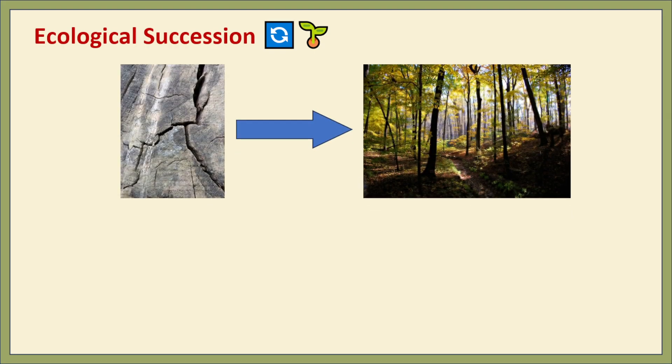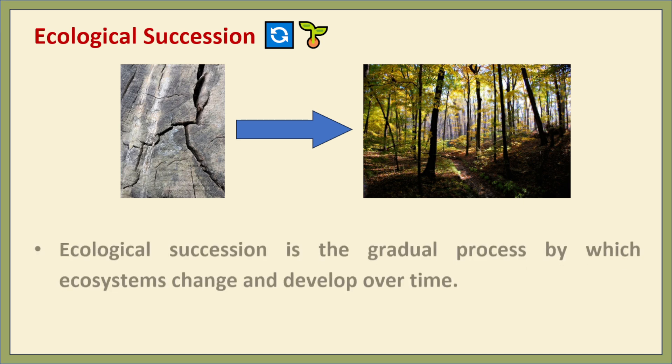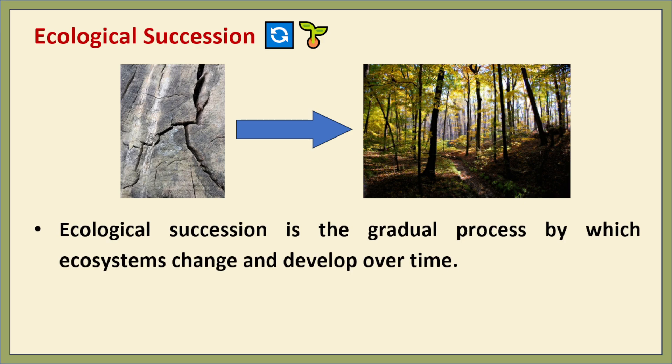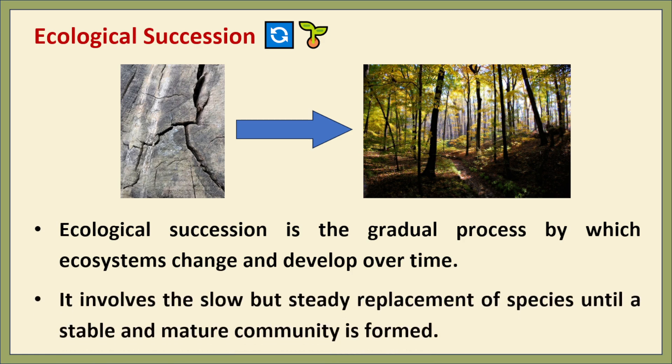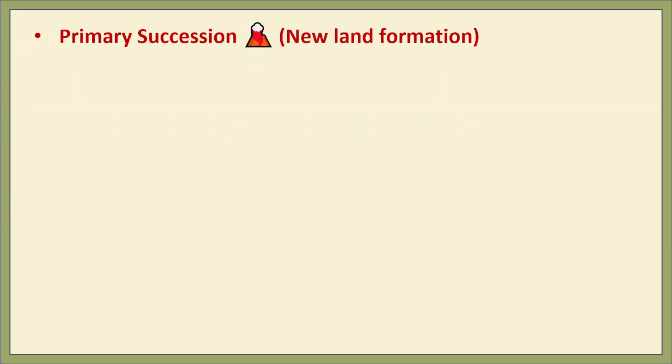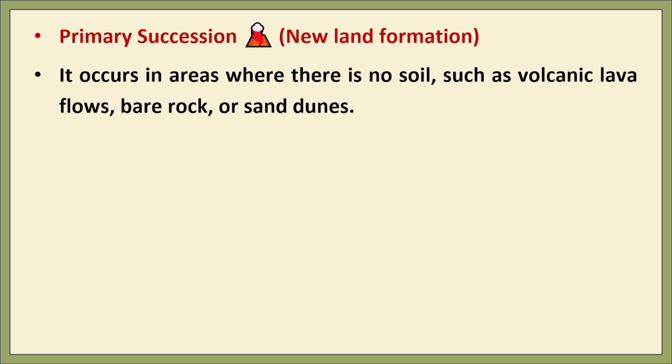Have you ever wondered how an empty, barren land can turn into a lush forest over time? This transformation happens through a natural process called ecological succession — the process by which the structure of a biological community evolves over time. It involves the gradual change in the species composition of an ecosystem, leading to the development of a stable and mature community. The first type is primary succession, which occurs in areas where no soil exists, such as bare rock, volcanic lava, or sand dunes.